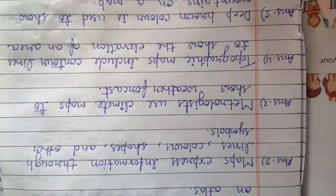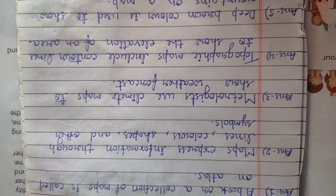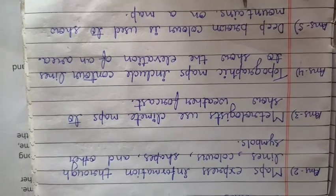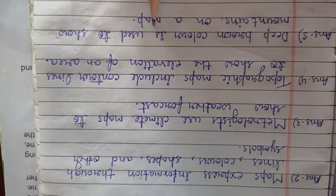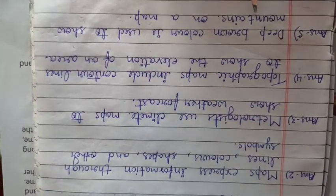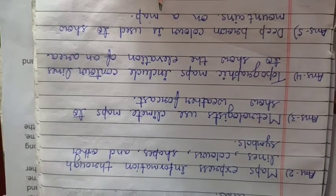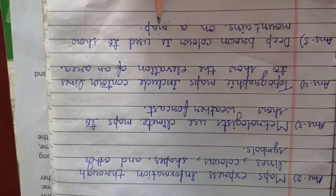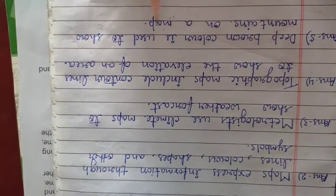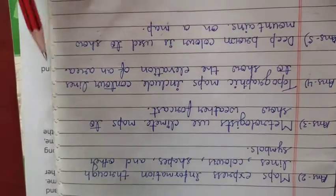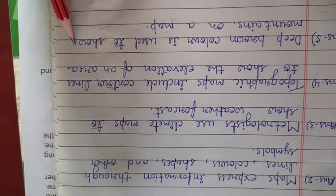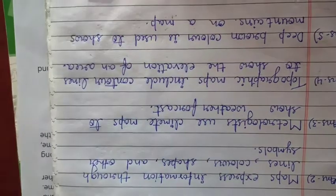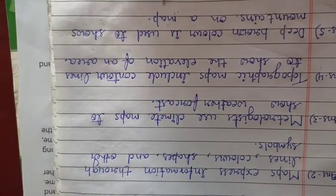And the last question: which color shows mountains on the map? Answer number 5: deep brown color is used to show mountains on a map. कांसा वाला कलर? Deep brown color is used to show — right here S also, W के बाल, S B, लिख लिजए — shows mountains on a map.